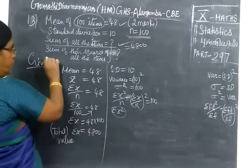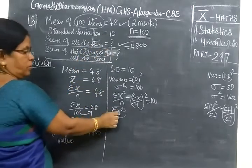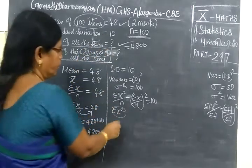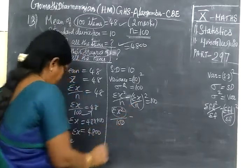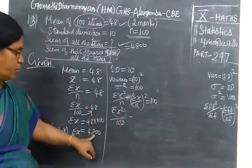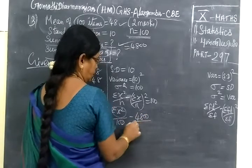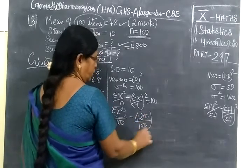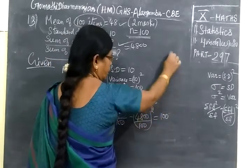Next we can see sum of the squares, sigma X square by N. N is 100 minus sigma X, 4800 by N, N equal to 100. Sigma square equal to 100 minus...